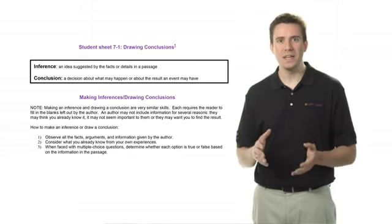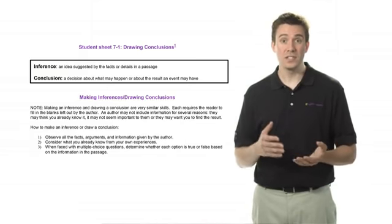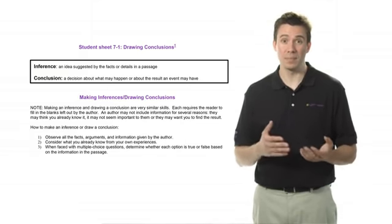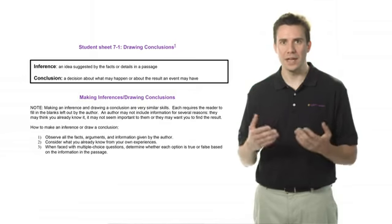One is an idea that's being suggested, and one is a decision about what will happen because of something else. A result, as the definition says.